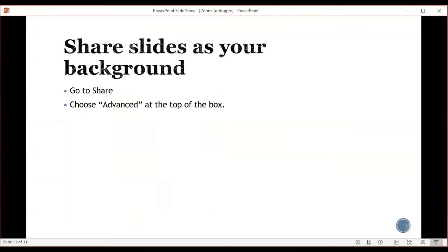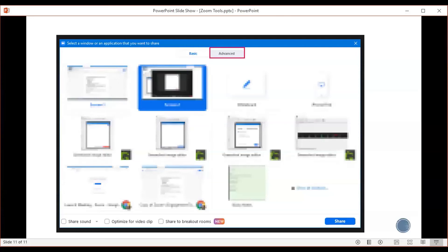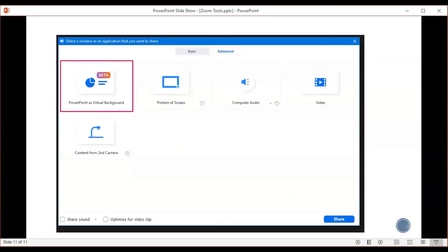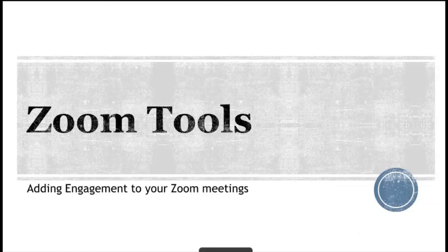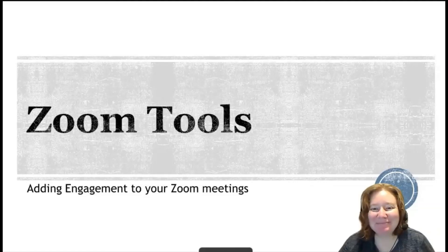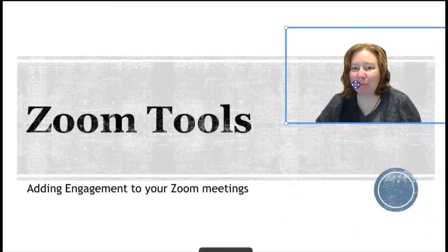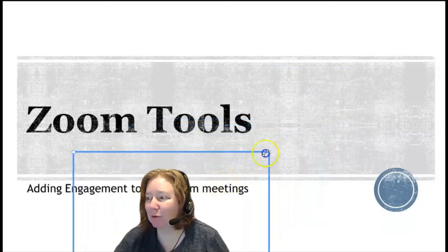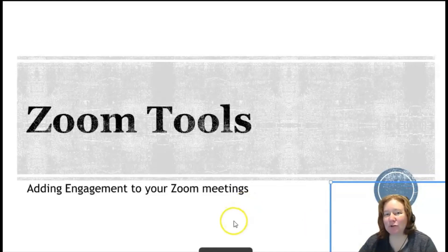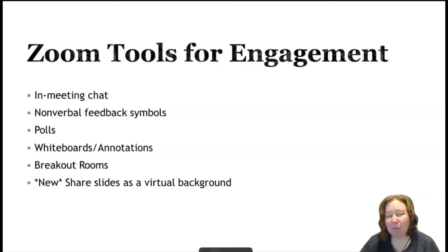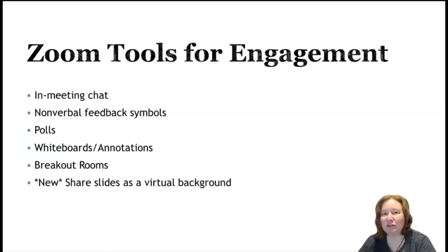The last thing we're going to talk about is sharing slides as your background — this is brand new. If you go to share screen and choose advanced at the top of the box, you will have options including PowerPoint as virtual background. Here's what that looks like: your PowerPoint appears as the background and you appear on screen within it. You can move the video box around the screen and make it bigger or smaller. One thing to know is that if you choose to do this, you can flip through your PowerPoint, but any animations will not work. So if you have animations, just do it the regular way. Otherwise, this is a good way for you to be more interactive with your audience.